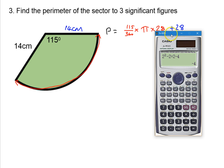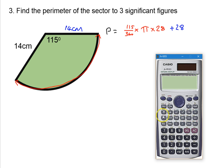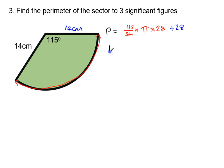Okay, so now using my calculator, I can say, right, I've got 115/360th times pi times the diameter, which is 28. And I also want to add on this section 28 here. And that gives me, to three significant figures, 56.1 centimeters.